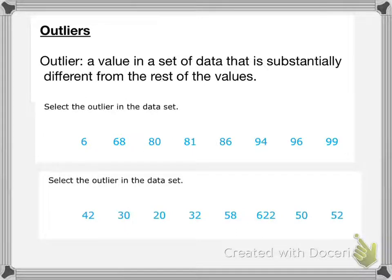Hi ladies and gentlemen, how are you? I hope you're doing well. Today we're going to be talking about outliers in a set of data. So let's take a look at the definition first. An outlier is a value in a set of data that is substantially different from the rest of the values.